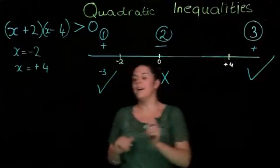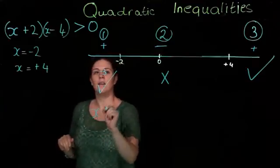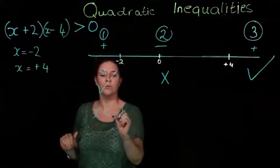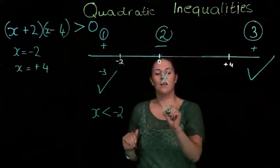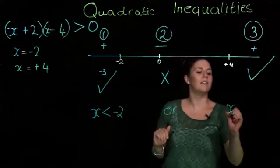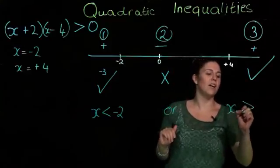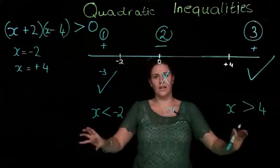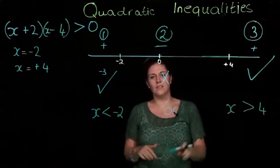So our solution is in this region and this region: x is less than minus 2 or x is greater than 4. You do not want to combine those together in one line—it just gets too confusing and it's easier to make a mistake.